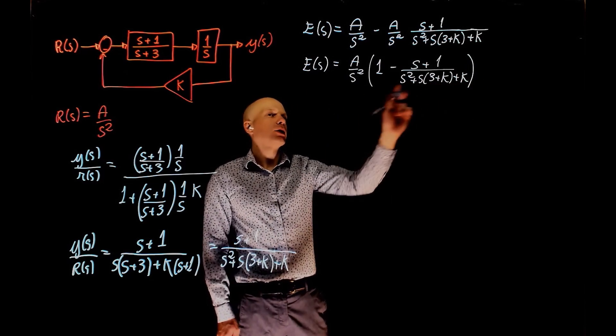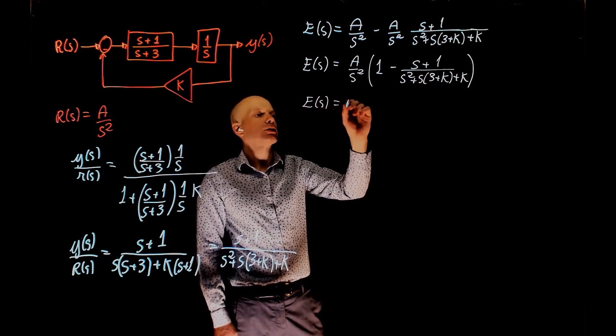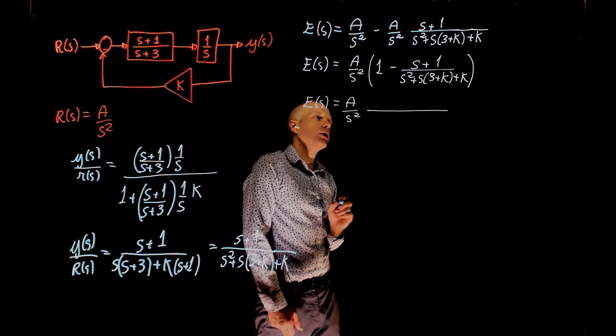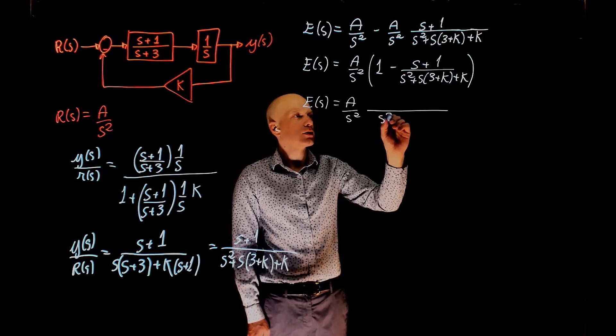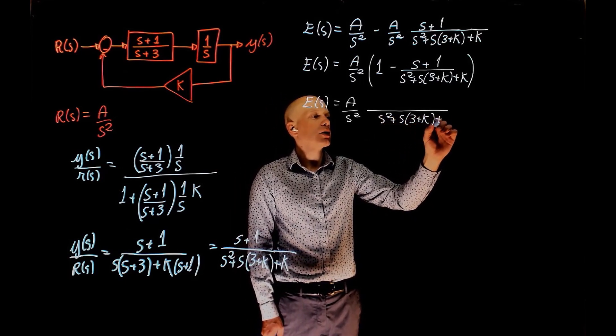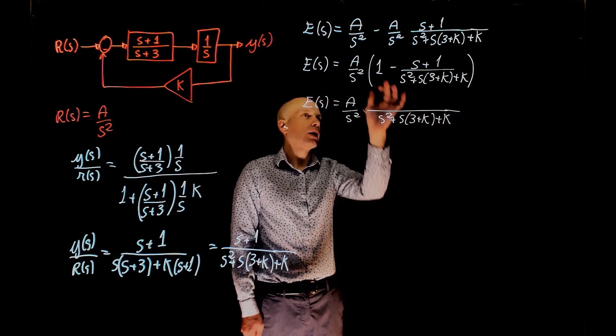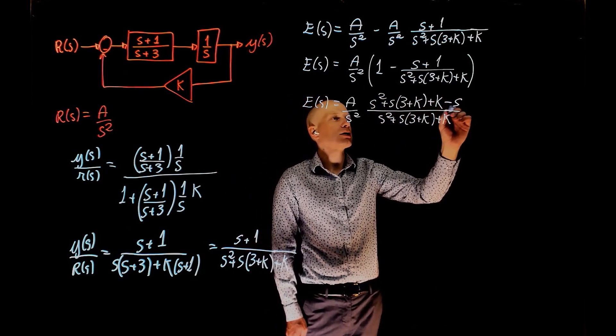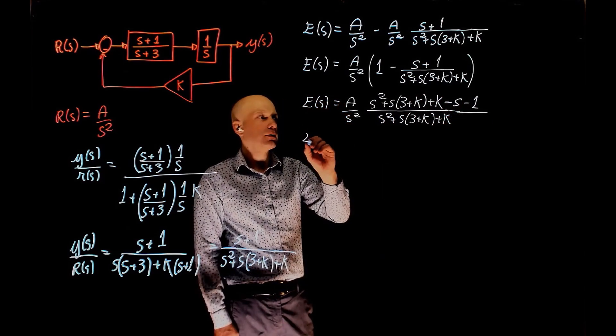We can now find a common denominator here. The error is a over s squared, times the common denominator, that is, s squared plus s times 3 plus k, plus k, times 1, minus s minus 1.